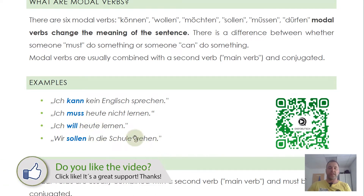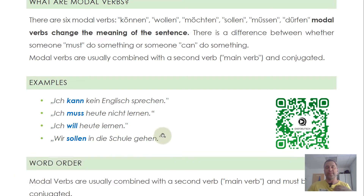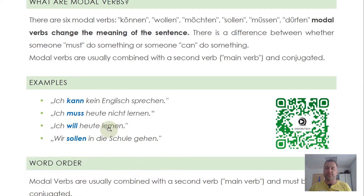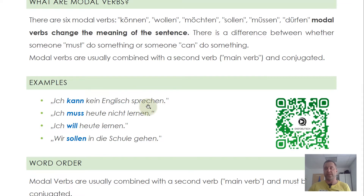Wir sollen in die Schule gehen — we should go to school, we're supposed to go to school. You can see that modal verbs are a little bit different from their English counterparts, because English doesn't really need to be specific about modal verbs as the structure is a little bit easier. The difference here is that these verbs do not use the so-called infinitive with 'to' — there's no 'to' in front of the verb, despite them referring to another verb.